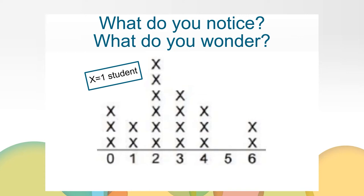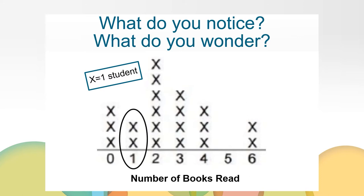A line plot is a graph that can display numerical or categorical data. The frequency of data can be easily seen on a line plot. For example, I can see that two students read one book. Line plots have a key so that we understand what each data point represents. Lastly, line plots will always have a title. The title of this line plot is Number of Books Read.